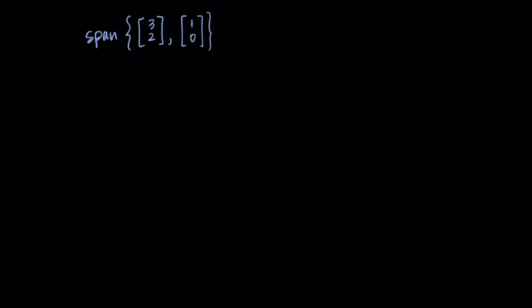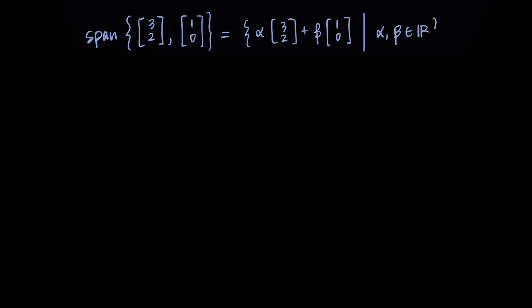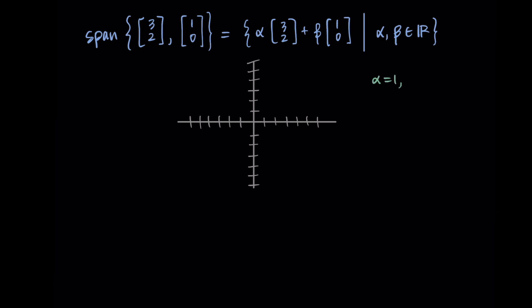Now let's look at the span of vectors [3,2] and [1,0]. This is the set of alpha times [3,2] plus beta times [1,0] where alpha and beta are real numbers. At first it looks similar: alpha=1, beta=0 gives [3,2]. But with alpha=0 and beta=1 we get the vector [1,0], which gives us movement in a different direction — that's great.